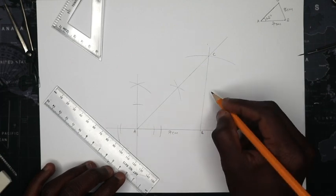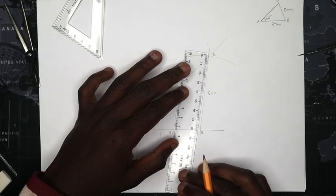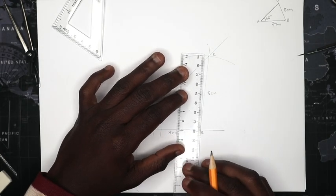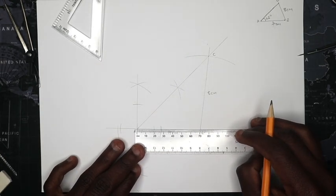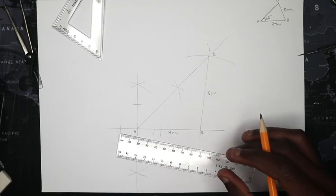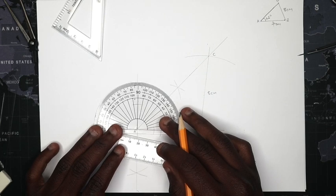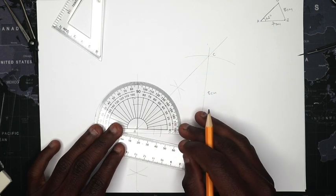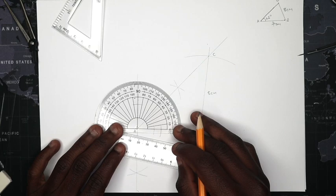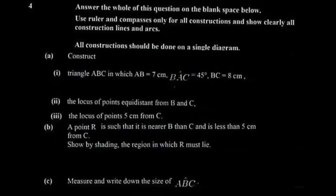Label your measurements: AB is 7 centimeters, BC is 8 centimeters. When you're revising, you can check — is it really 8? Yes. Is it really 7? Yes. Is angle BAC really 45 degrees? Check with your protractor — yes, it's 45 degrees.